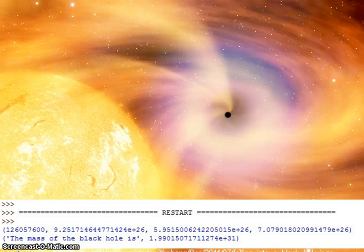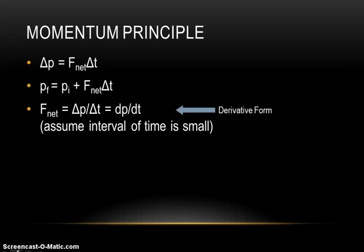There are a few main physics principles that one must first recognize in order to understand this lab and how to solve for the mass of the black hole. First is the momentum principle, which is delta p equals f net times delta t. This can be rearranged in order to solve for other parts. The derivative form is f net equals dp dt.